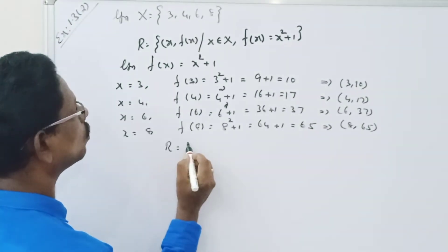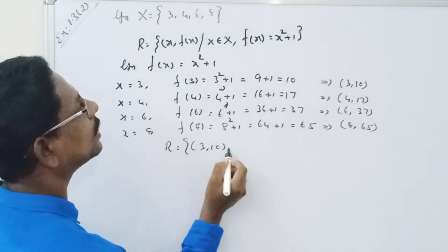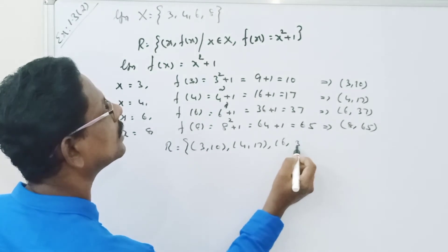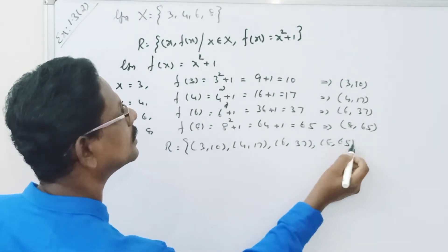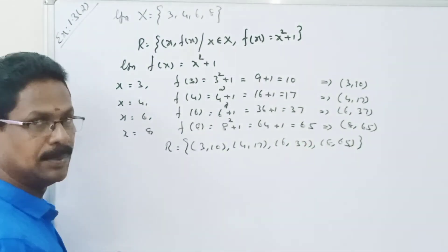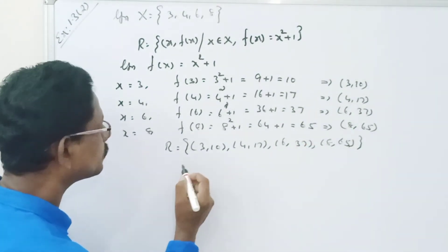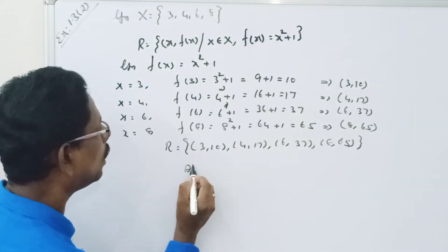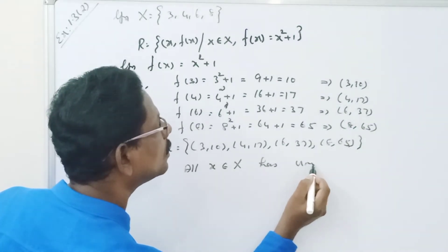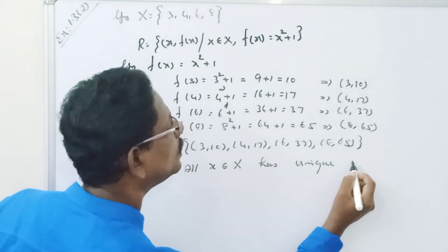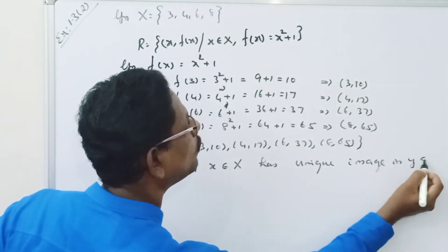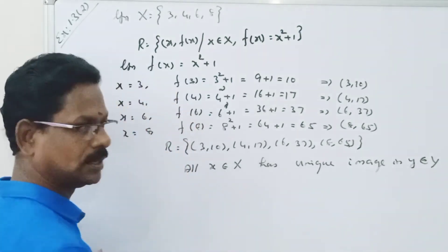Therefore, R is equal to: 3 comma 10, 4 comma 70, 6 comma 37, and 8 comma 65. All the elements of x belongs to X, so it is an image. Each x belongs to X has unique image in y belongs to capital Y.